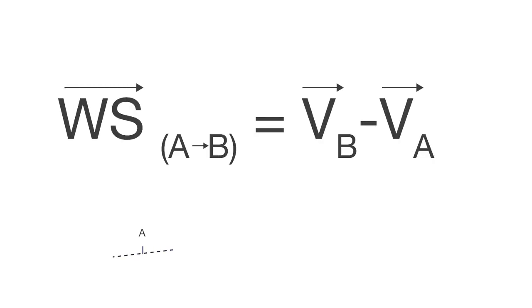Mathematically, we define wind shear as the wind vector difference between two points along a short trajectory. Let's take an example. If the wind strength and direction change with height above a point in the atmosphere, a vertical wind shear exists.